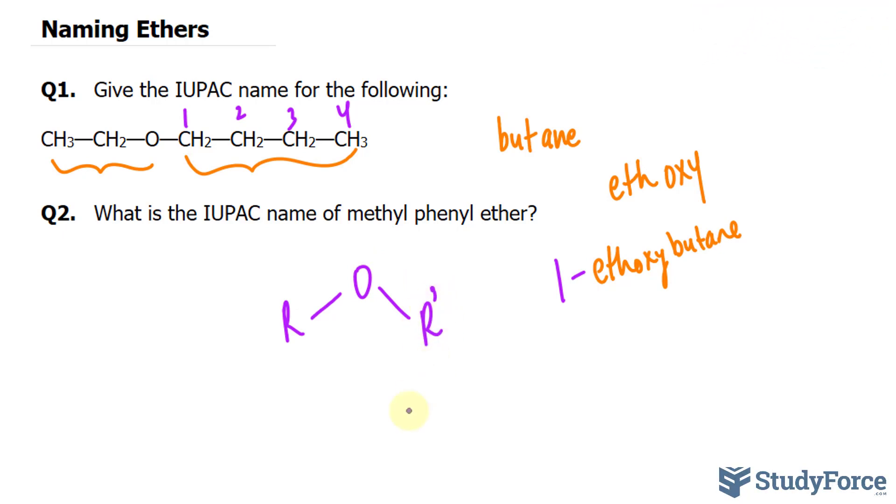An ether group is technically a functional group that you see on another molecule. Now, we're being told that it's ether and there's a phenol. Phenol looks like this, where you have a benzene ring, like that, and it's connected to something else. We'll call it R.